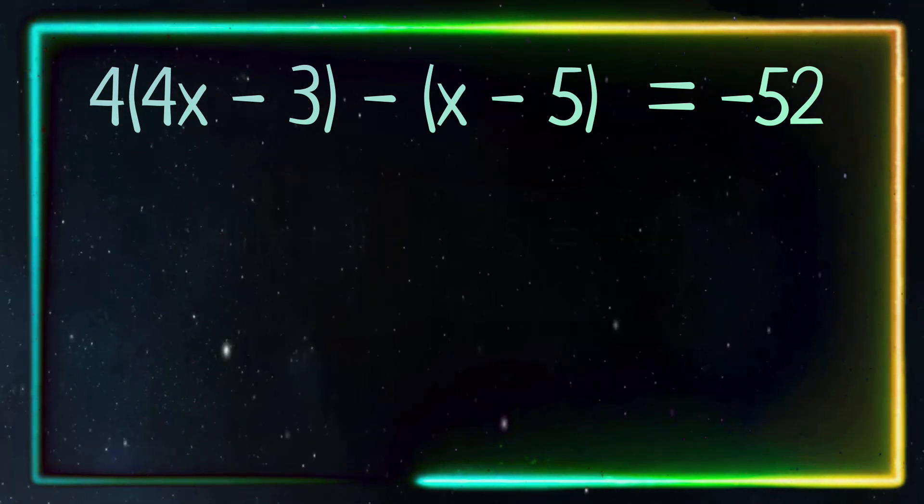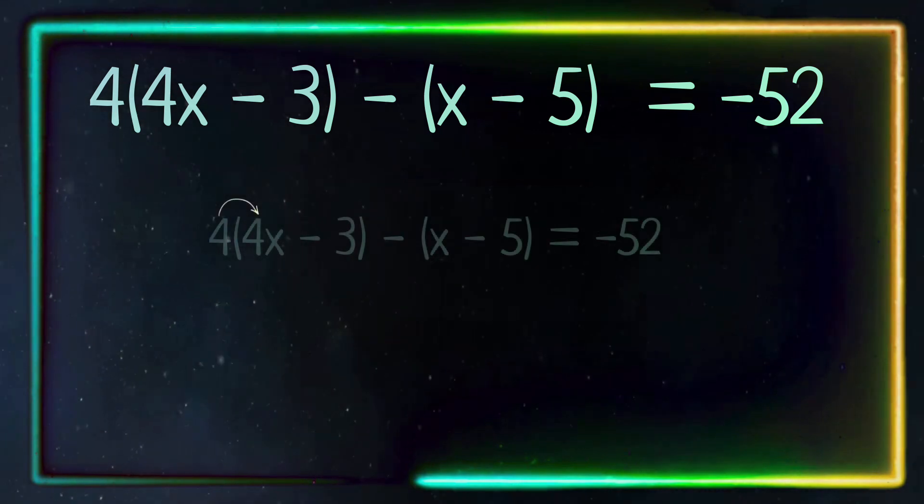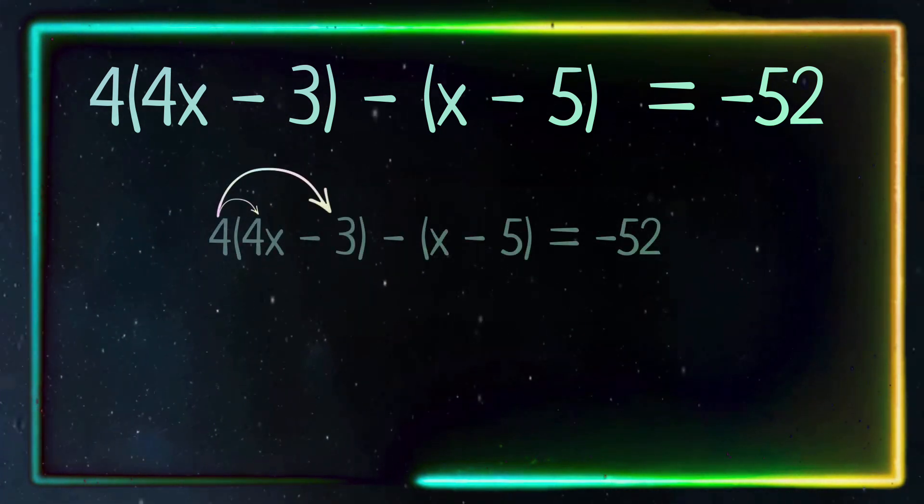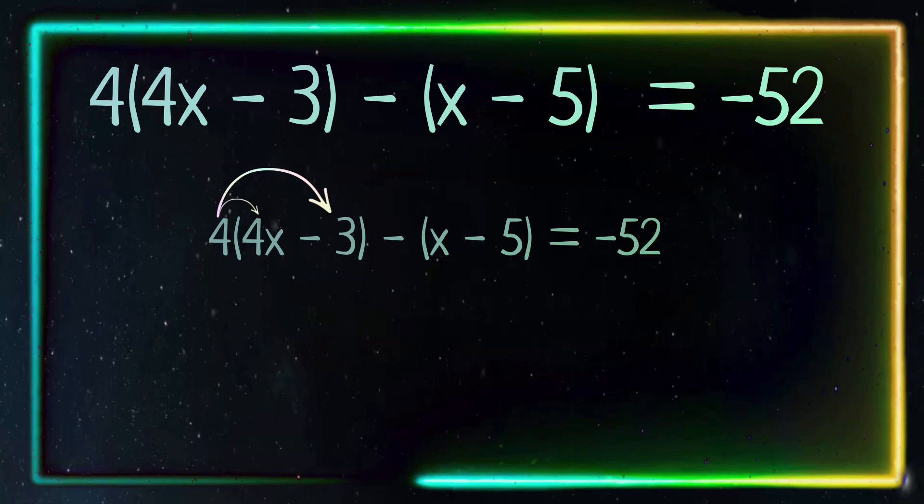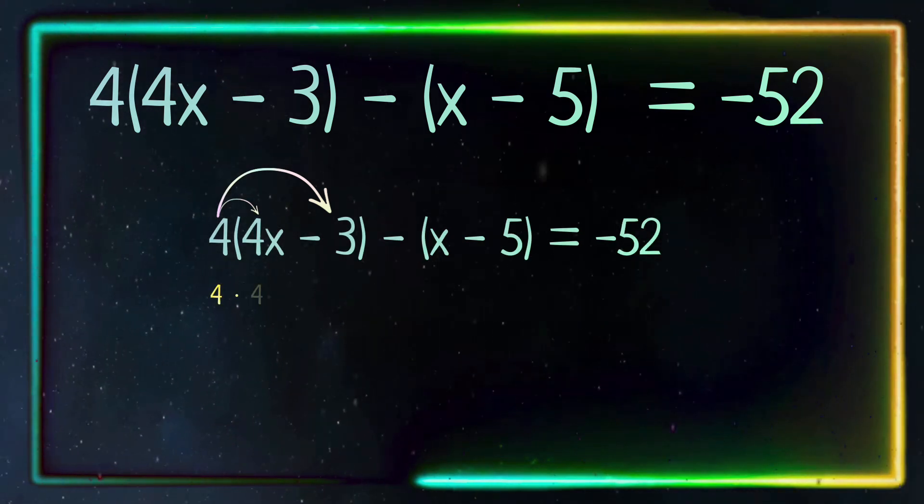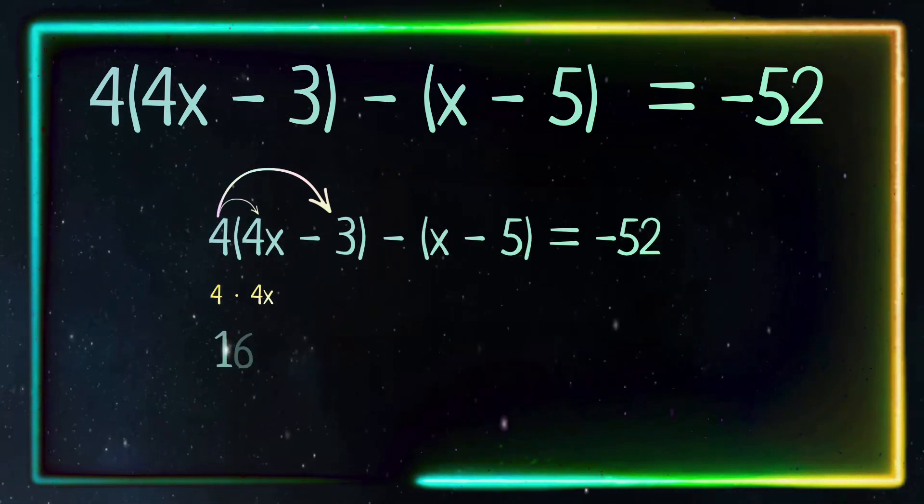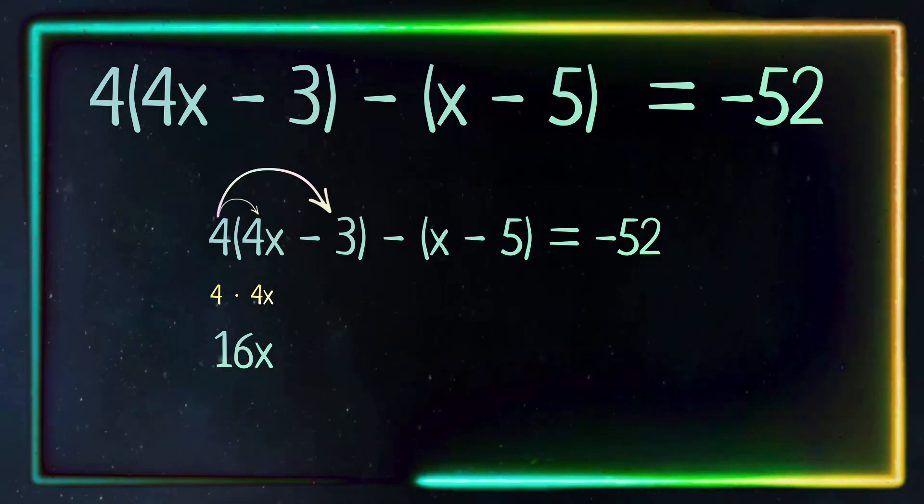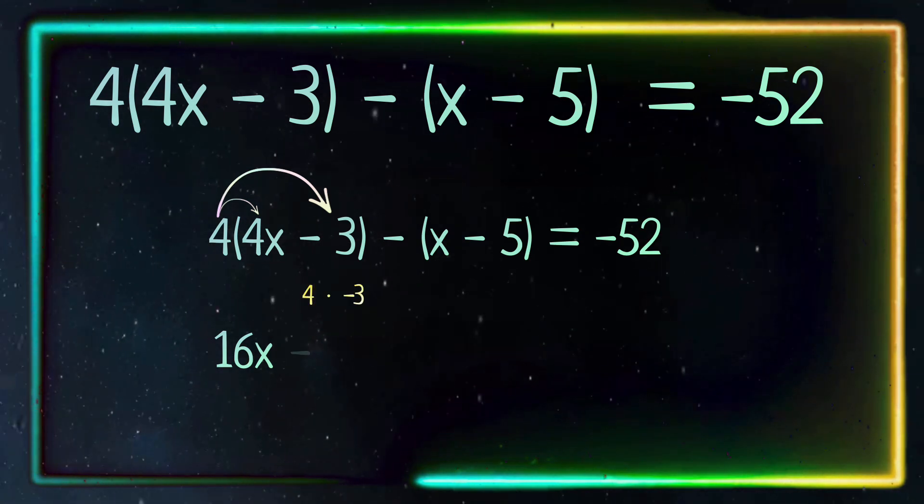First, we will distribute the 4 to the 4x and then the 4 to the negative 3. 4 times 4x equals 16x and 4 times negative 3 equals negative 12.